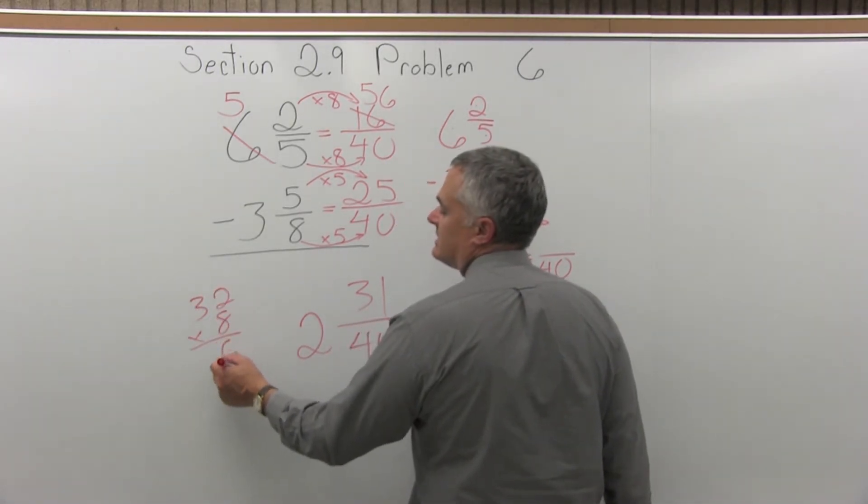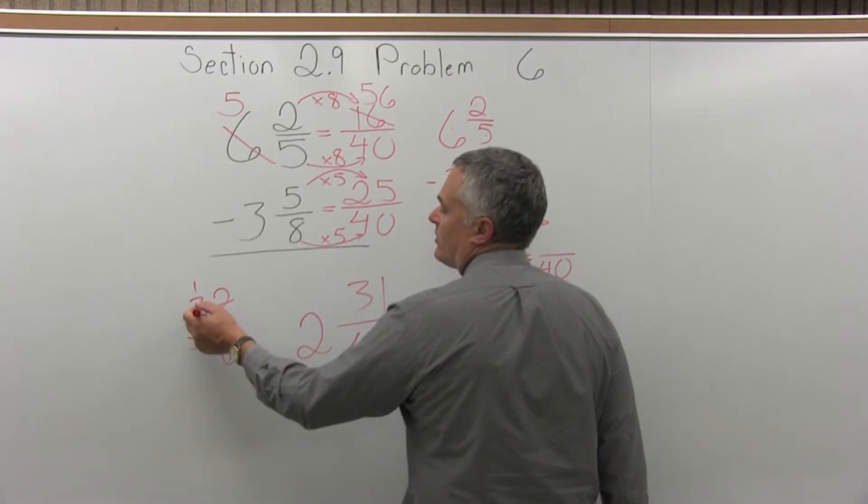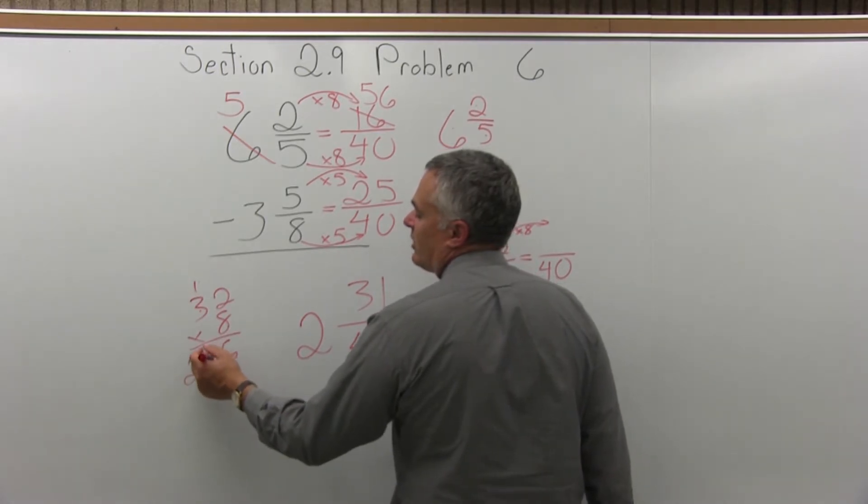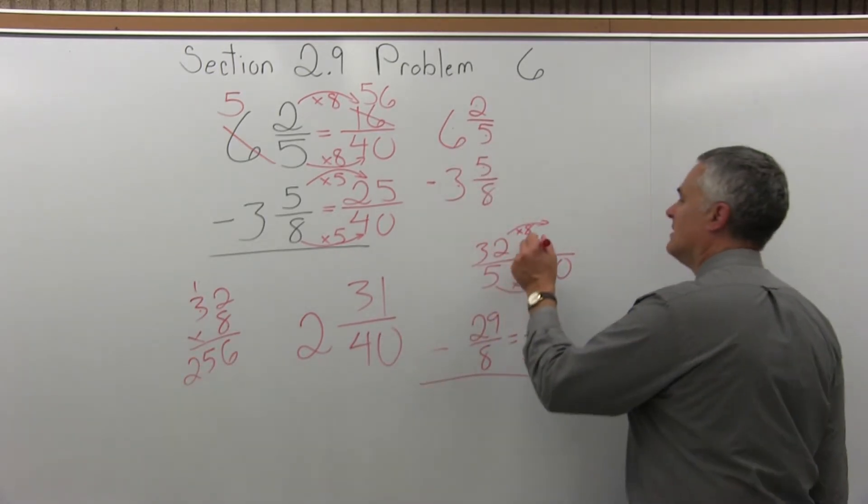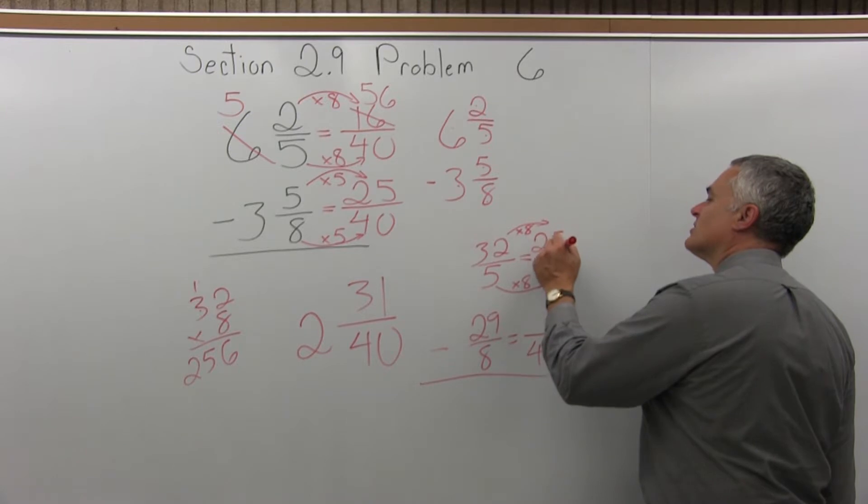Carry the 1. 8 times 3 is 24, plus the one more that you carried, 24 and one more is 25. 256. So I have 256 over 40.